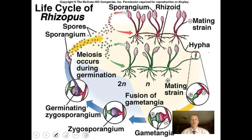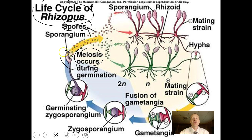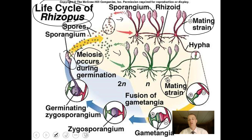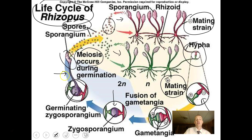The life cycle of bread mold is interesting. Starting at meiosis, a stalk called a sporangium produces spores that form mating strains — a minus mating strain and a positive mating strain. At some point these hyphae come close together; the outswellings are called gametangia. They fuse and form a zygote. The zygote then produces a stalk and sporangium, which undergoes meiosis to produce new spores and new mating strains, continuing the life cycle.